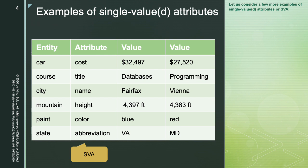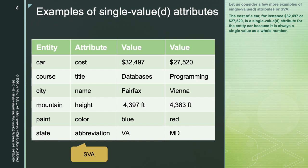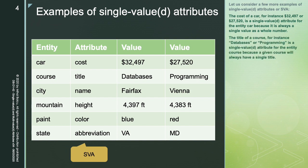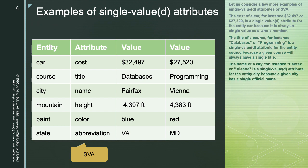Let us consider a few more examples of single-valued attributes (SVAs). The cost of a car — for instance, $32,497 — is a single-valued attribute for the entity Car, because it is always a single whole number. The title of a course — for instance, Databases or Programming — is a single-valued attribute for the entity Course, because a given course will always have a single title. The name of a city — for instance, Fairfax or Vienna — is a single-valued attribute for the entity City, because a given city has a single official name.